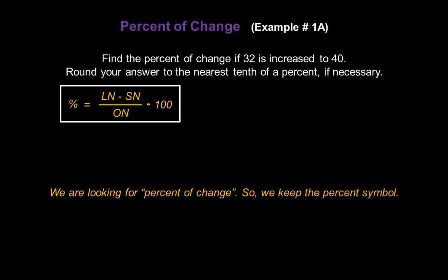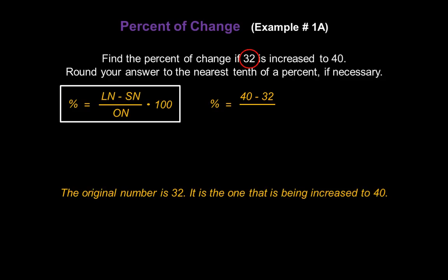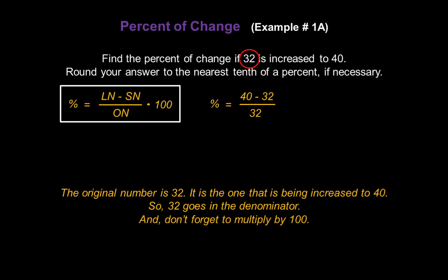We're looking for percent of change in this problem, so we keep the percent symbol as is and write percent equals. The larger number is 40, so we replace Ln with 40. The smaller number is 32, so we replace Sn with 32. Our numerator is 40 minus 32. The original number is 32 — it's the one being increased to 40 — so we replace On in the denominator with 32. Don't forget we have to multiply by 100 so our answer becomes a percent.